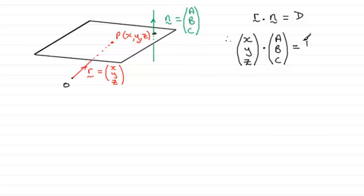And if we use the scalar product here between these two vectors, what we get is therefore ax plus by plus cz equals the constant d.